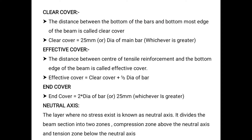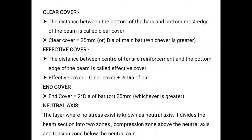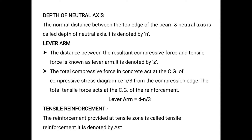The neutral axis splits the beam into two zones: compression zone on top and tension zone on the bottom. The depth of the neutral axis is measured from the top edge of the beam to the neutral axis, denoted as 'n'. Tensile reinforcement is denoted by capital A_st.